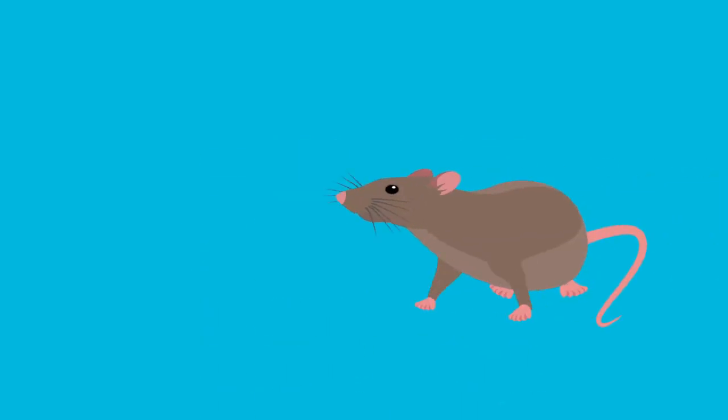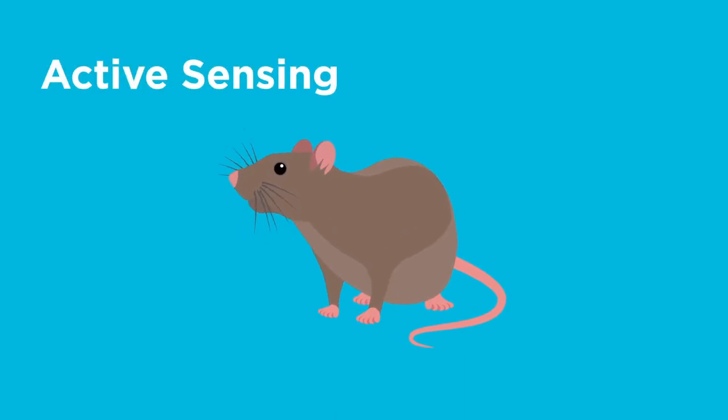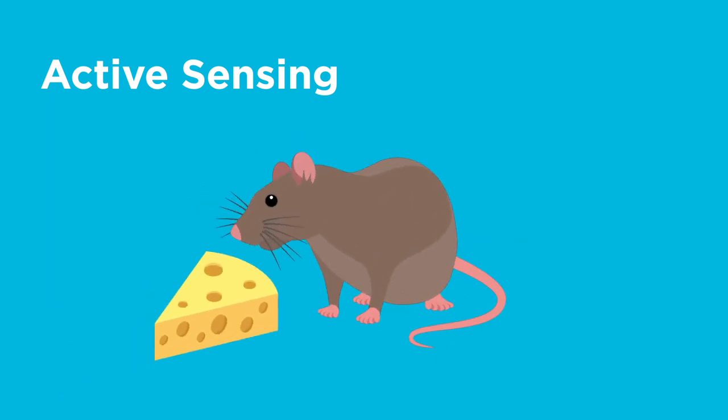First, sensory information from the surrounding environment is actively acquired by a motor and or attentional sampling routine. This strategic, goal-driven sampling of inputs is called active sensing.